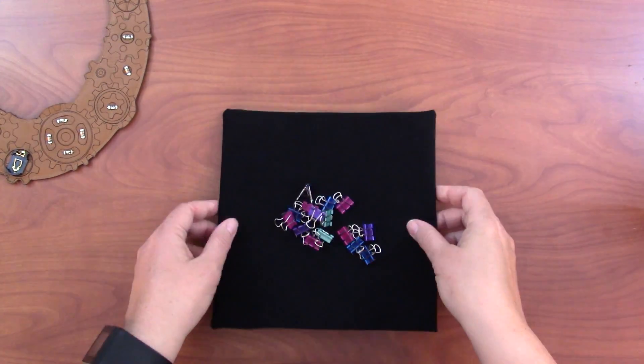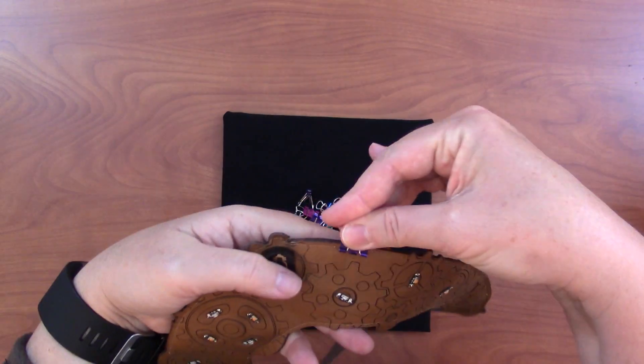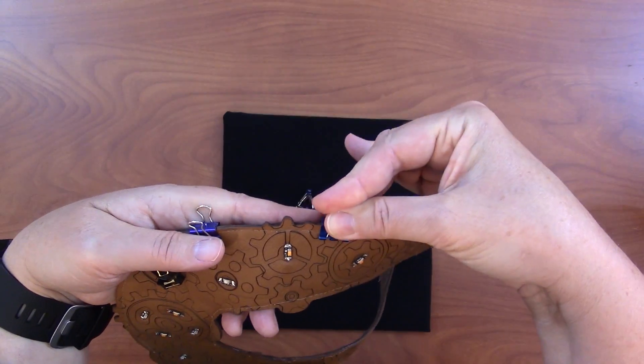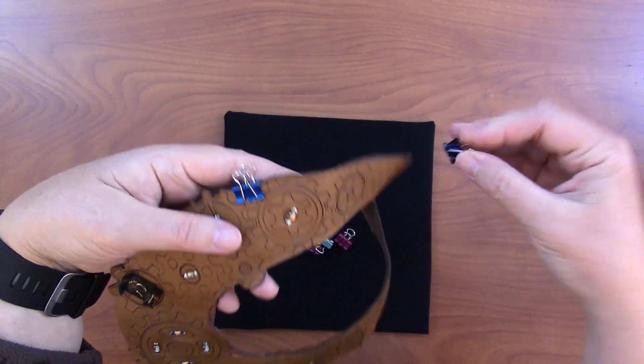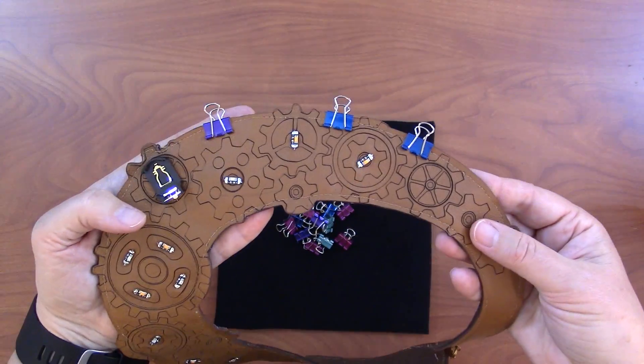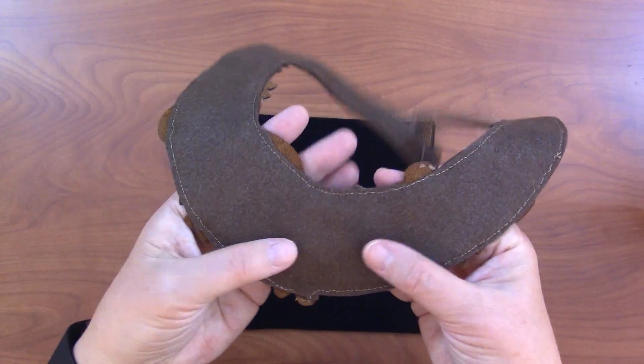So unlike with fabric that you can pin together, you can't use pins on leather because you'll put holes in it. So instead you need to use some kind of clip. I just use these binder clips that I have laying around and I put a lot of them on the edge to hold them together while I sew.